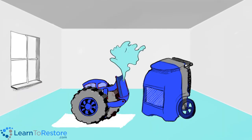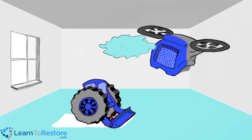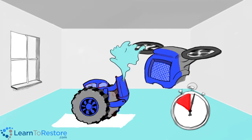The airmover's job is to bring energy to the materials, causing evaporation. This moves the water into the air as vapor. The job of the dehumidifier is to remove the water vapor from the air.